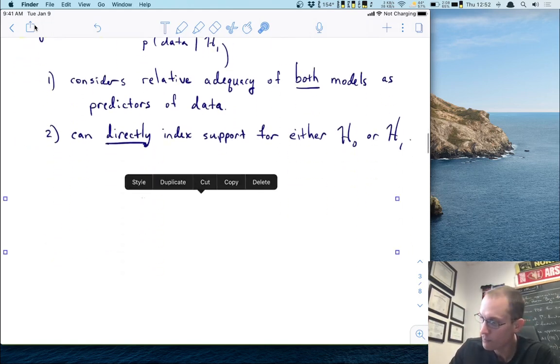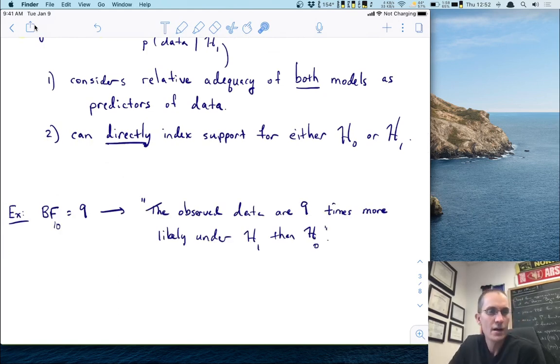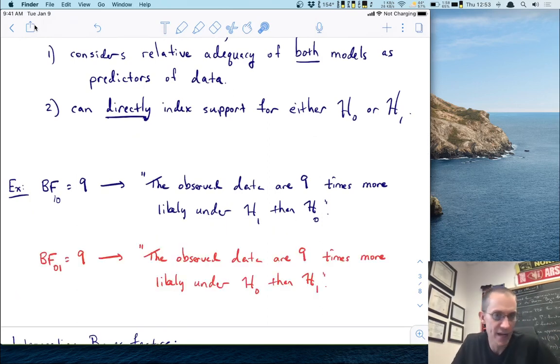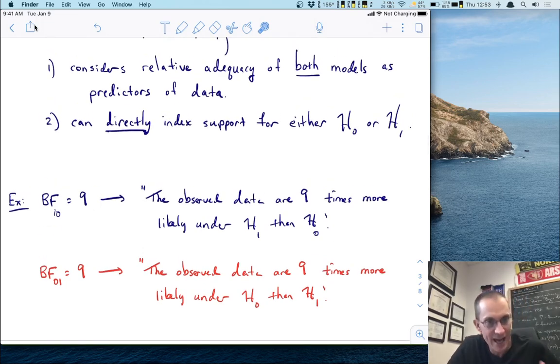Here's an example. Let's suppose that we had a BF10 of nine. So what that would mean is that the observed data are nine times more likely under h1 than under h0. So that's kind of cool. Not only the fact that it is bigger than one, which means that the h1 model is more preferred, but it also tells you how much more preferred. It is nine times more likely under h1 than h0. Now, just as easily, we could have gotten BF01 equals nine. Notice how the difference in the subscripts here tells you the direction of the evidence. So in this case, we would say the observed data are nine times more likely under h0 than h1.